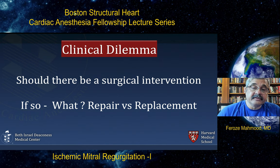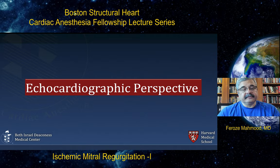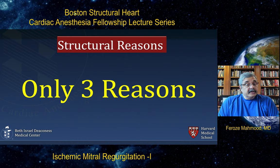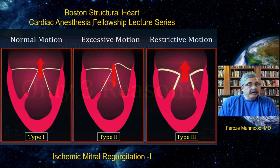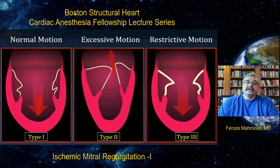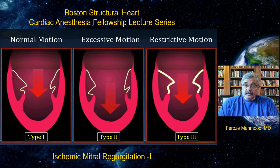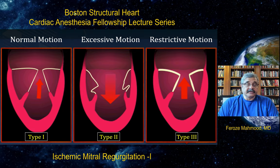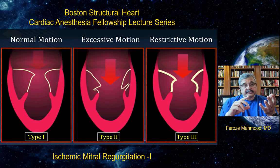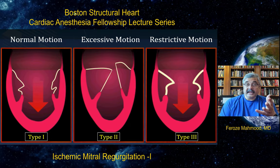Now let's go over the echocardiographic perspective. Structurally, there are only three reasons a mitral valve could be dysfunctional — dysfunction defined as significant mitral regurgitation. According to Carpentier's classification: Type 1 dysfunction is when the valve is moving normally — either the annulus is dilated or there's a perforation in the mitral leaflet. Type 2 is excessive motion, and Type 3 is restricted motion. Ischemia can cause mitral regurgitation by all three mechanisms: Type 1 through annular dilation, Type 2 through papillary muscle rupture, and Type 3 — the most common — being leaflet restriction or apical displacement of the mitral leaflets.